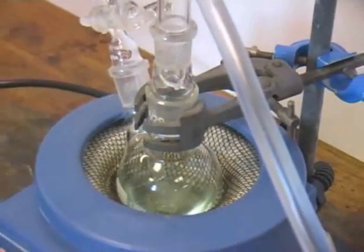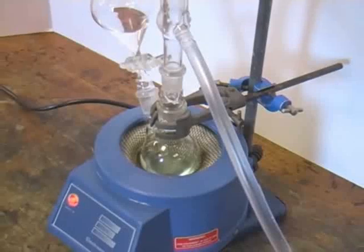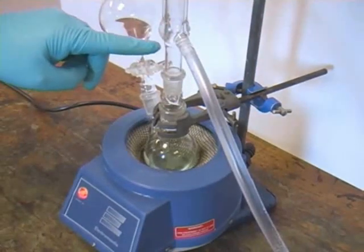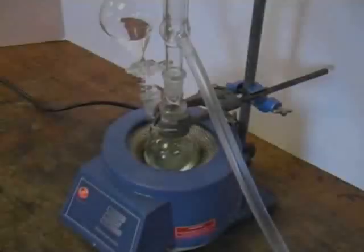Here you can see the reaction mixture in a state of reflux. As the solvent boils, its vapour condenses in the condenser before dripping back into the round bottom flask. This allows us to keep the temperature of the reaction high without losing solvent vapour.